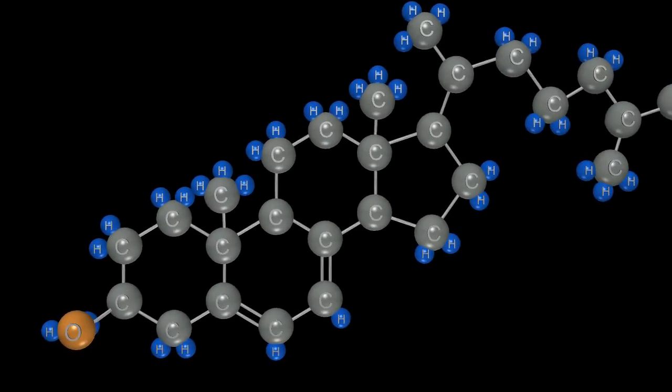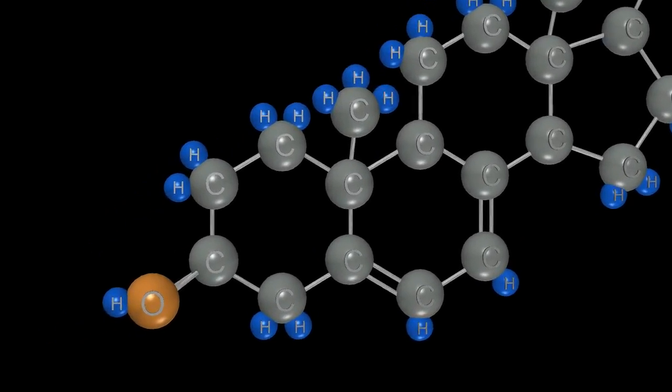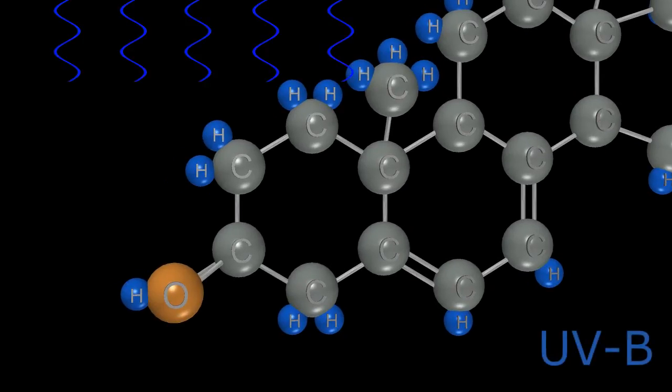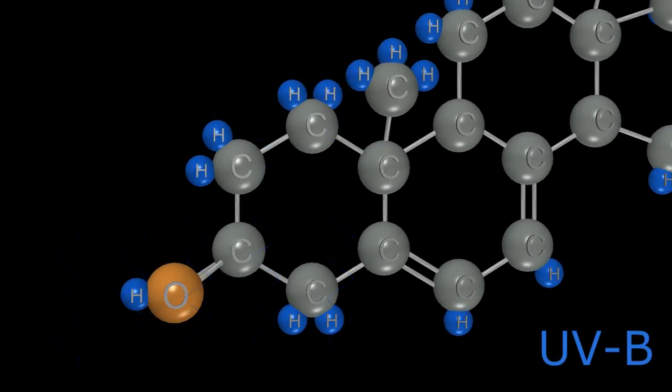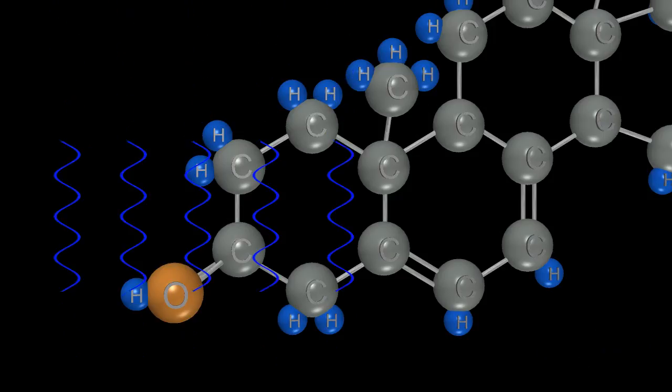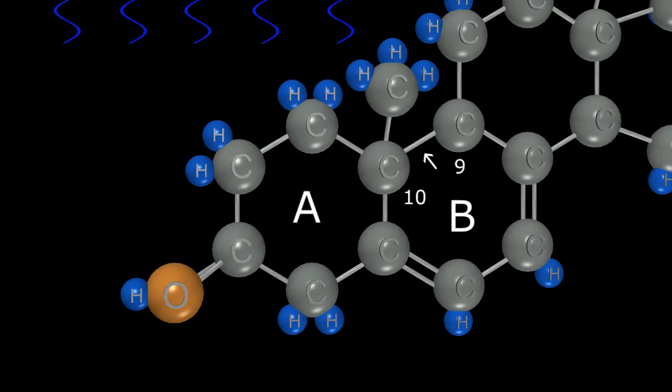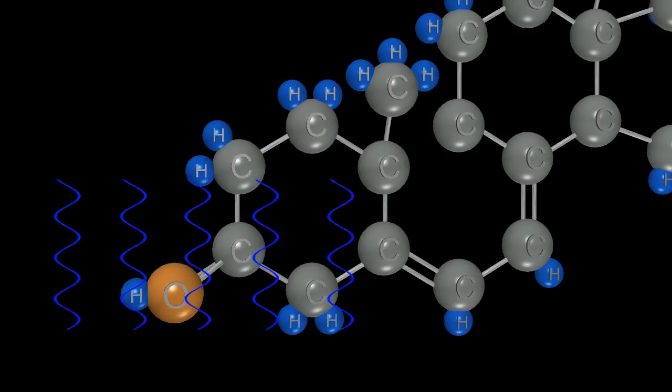When 7-dehydrocholesterol in the stratum basale and stratum spinosum is exposed to ultraviolet B light, the energy is absorbed by the molecule and breaks this particular bond between carbon 9 and carbon 10, linking the A and B hexagonal rings, effectively disrupting the second hexagonal ring. Since we've lost this connection, we now have to rearrange the atoms and remaining bonds to maintain the requisite 4 connections per carbon and 1 connection per hydrogen atoms, respectively.